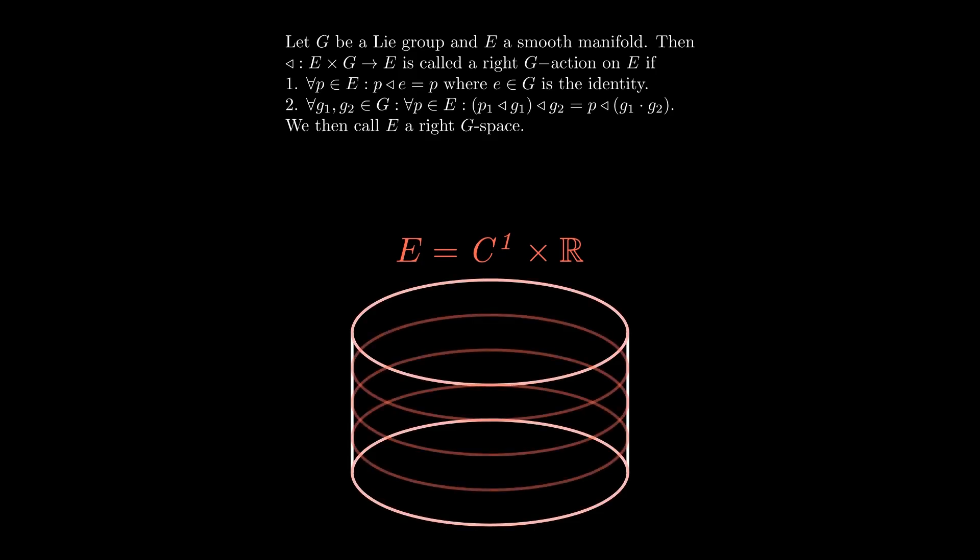We start by placing circles at different heights of the cylinder, then we place vertical lines. Let us bring in a red dot and track its coordinates. At the top it has the following coordinates. If we move the point down, the coordinates change in the following manner. As the point reaches each circle, the last coordinate changes by 0.5.